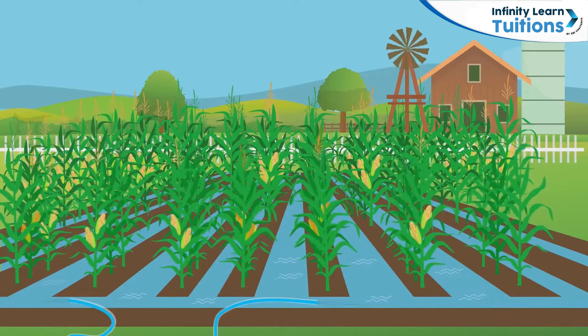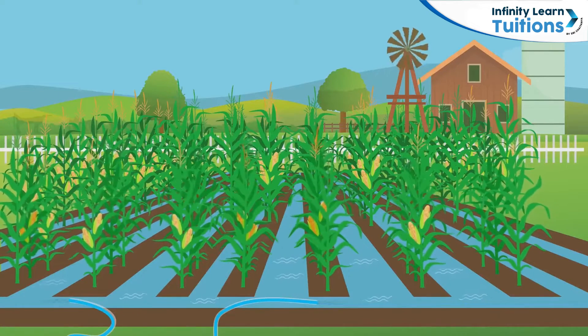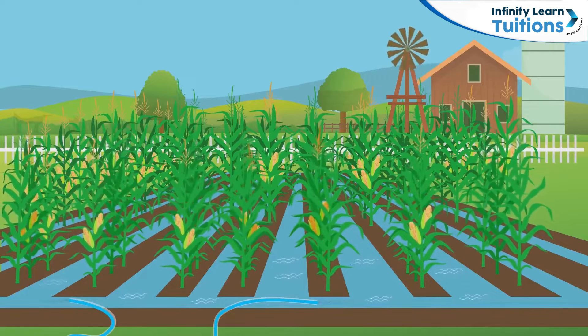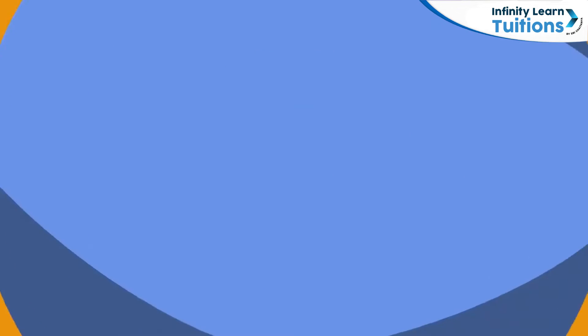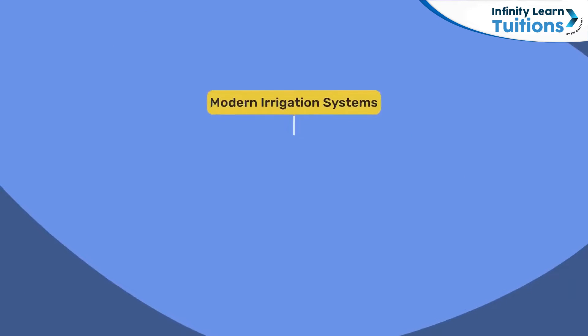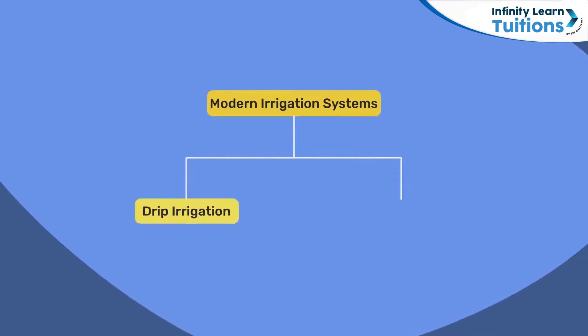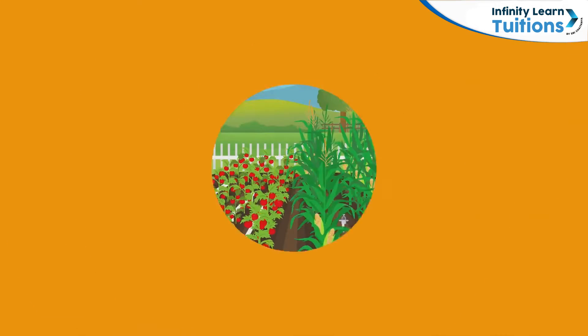Most farmers use pumps to collect water from a source. The two main types of modern irrigation systems are the drip system and the sprinkler system.